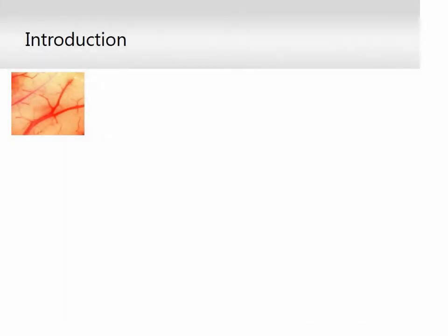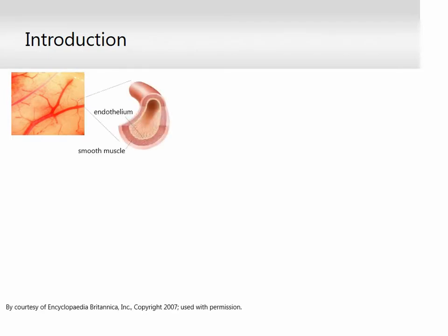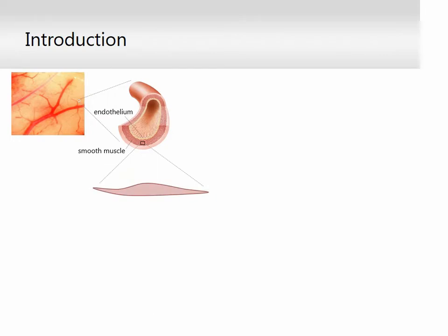A given vascular network like the cerebral circulation comprises arteries, veins, and capillaries. An arterial wall is made up of two main layers: the endothelium from the luminal side and the smooth muscle layer that circumferentially surrounds the vessel. The building unit of the latter is the arterial smooth muscle cell, whose contractile status is determined primarily by the entry of calcium ions to the cytoplasm.